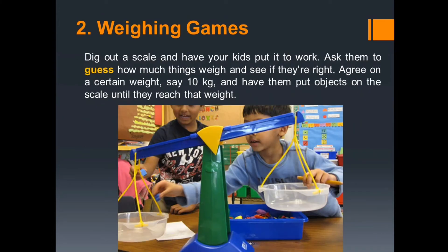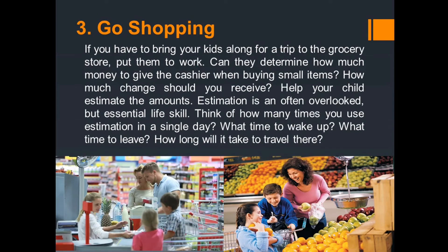Ask your child to measure and pour one cup of orange juice and ask them which is more — one half or one cup. Use different sizes of glasses to help your child understand volume. The opportunities for learning are endless. Number two: weighing games. Dig out a scale and have your kids put it to work. Ask them to guess how much things weigh and see if they are right. Agree on a certain weight — say ten kilograms — and have them put objects on the scale until they reach that weight.